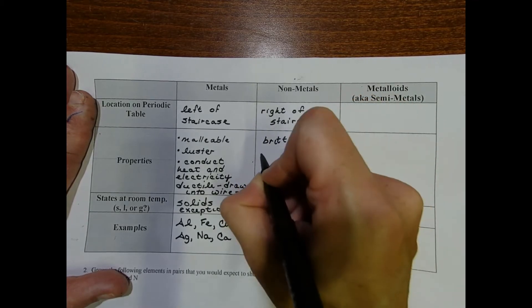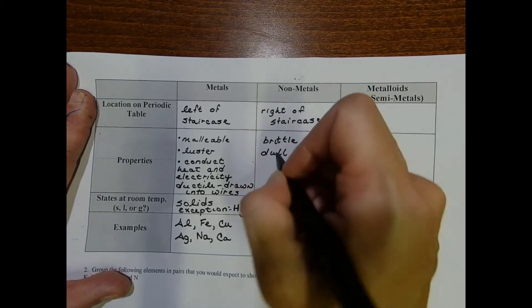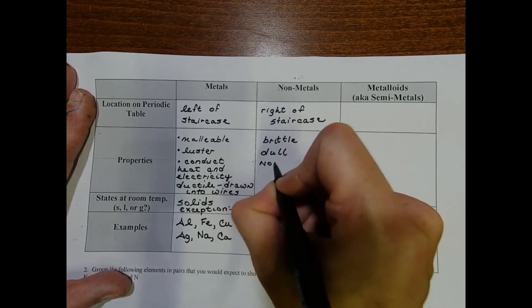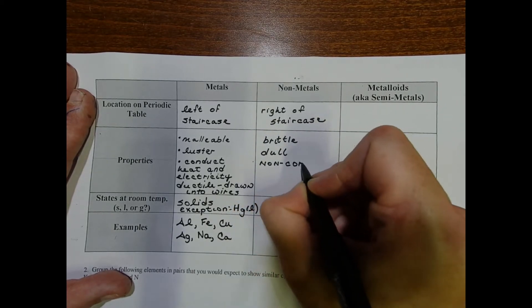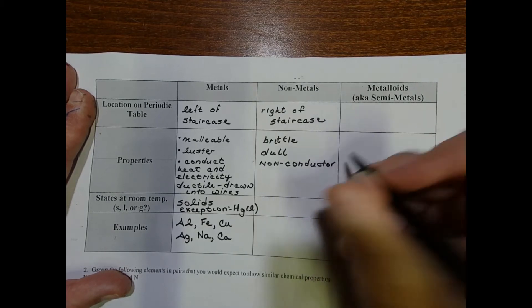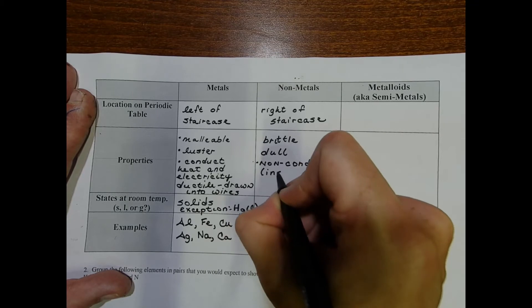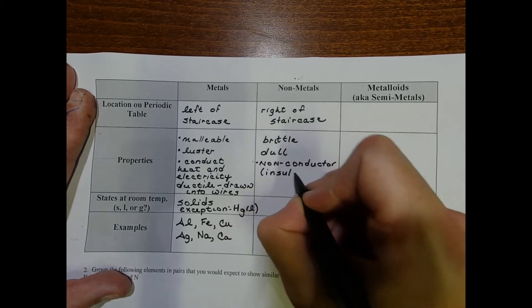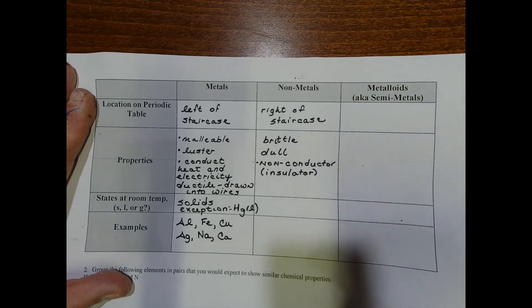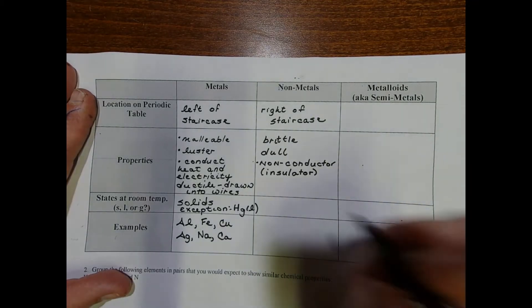It can be described as dull. Additionally, it's a non-conductor, so much so that non-metals are sometimes used as insulators. Carbon's a great insulator and also a great lubricant. If you grind up the graphite in your pencil, you'll notice it becomes very slippery.